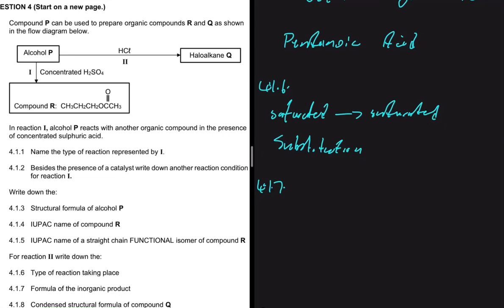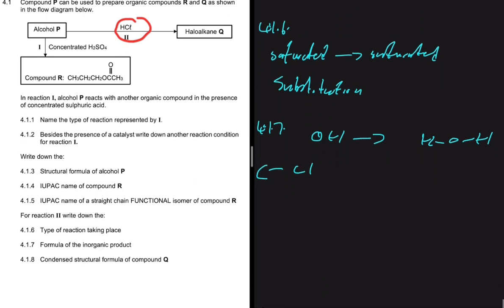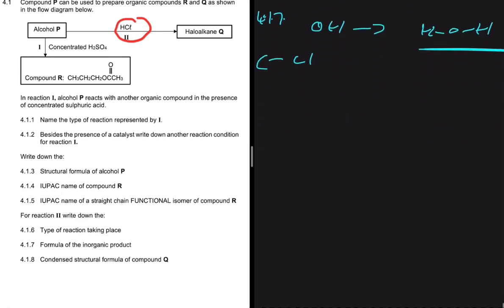For 4.1.7, write the formula of the inorganic product formed. We had an alcohol and the product is a haloalkane, so the OH has been eliminated from the alcohol and Cl has been substituted in. We added HCl, so now we have H2O as our inorganic product. The formula of the inorganic compound is H2O.